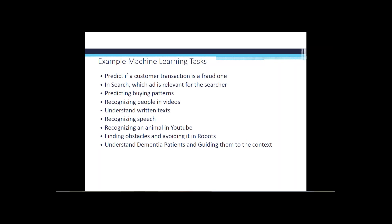Understanding dementia patients is a classic example — dementia patients lose temporarily the context in which they operate. Using IoT-based assisted living instrumentation combined with context and machine learning can guide them: here is where you are, here is what you were doing previously, to bring them back and help them take the next step. These are some granular examples of the tasks, giving a high-level view of the business applications of machine learning.